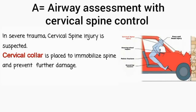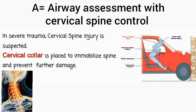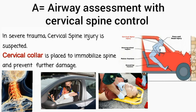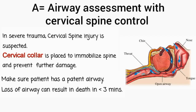After hemorrhage control comes airway assessment with cervical spine control. In severe cases of trauma, cervical spine injury is suspected, so a cervical collar is placed to prevent further damage to the spine. Next, we have to make sure that the patient has a patent airway, because loss of airway can result in death in less than 3 minutes.